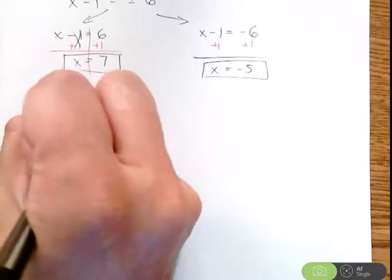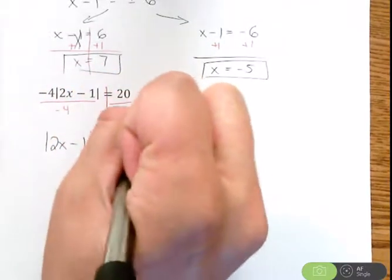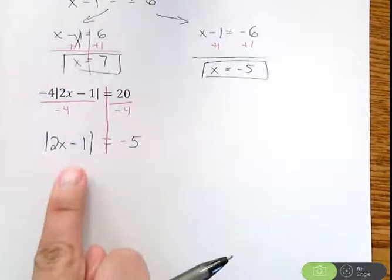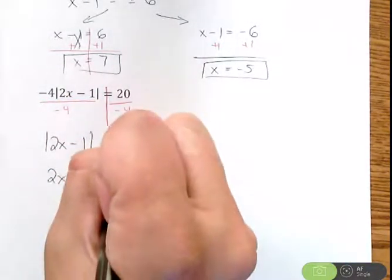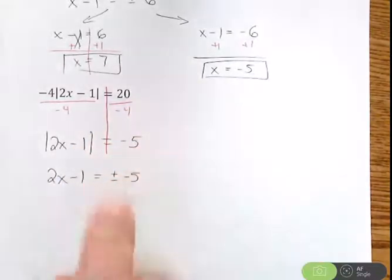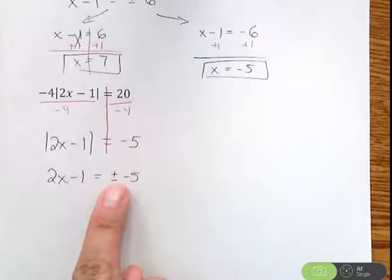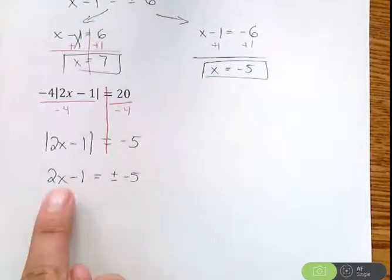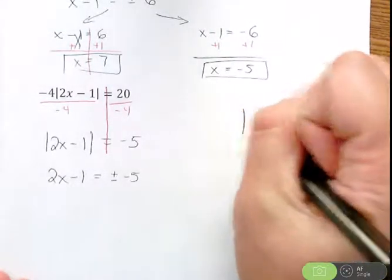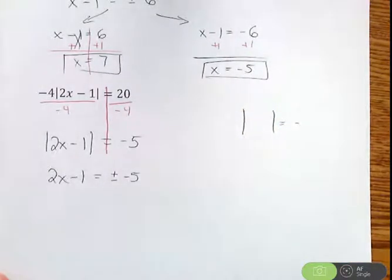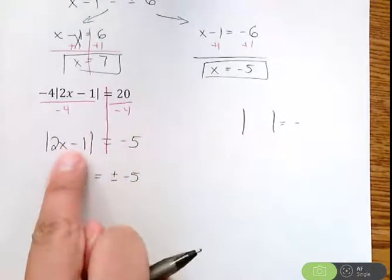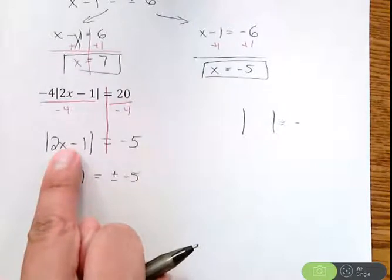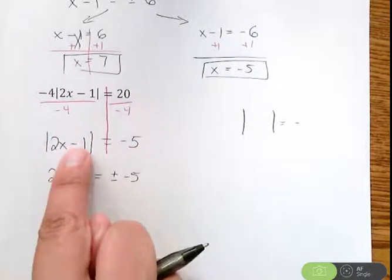So that will give me absolute value of 2x minus 1 equals negative 5. Now, to get rid of the absolute values, we could do that. You would have 2x minus 1, but on the right side, you would have to do a plus or minus and then a negative. It's starting to get crummy. That should look odd to you. Plus or minus negative 5. Remember, we can never have an absolute value equal a negative number. That will never happen. Absolute values always give you positive numbers. So there's no way, no matter what I plug in for x, I'm never going to get negative 5 because the absolute value is only going to produce positive numbers.